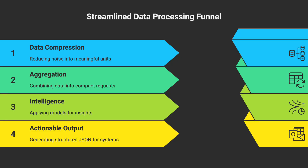Instead of paying for a model on every click or every log line, we send one compact request per short window, get a clear answer, and move on. We decouple ingestion, aggregation, and intelligence. The stream keeps flowing even if the model is slow or rate limited, and we make the output actionable by design — strict JSON that the rest of your systems can use immediately to personalize, throttle, flag, or route, with no manual action required.